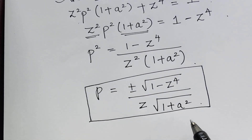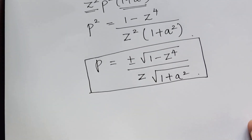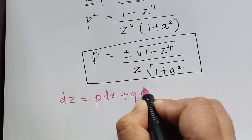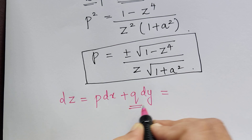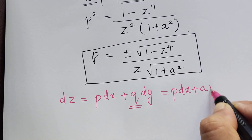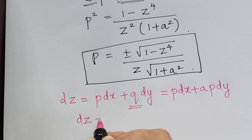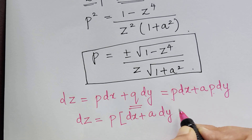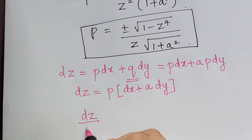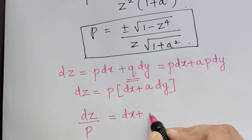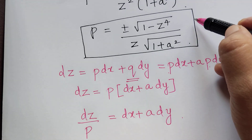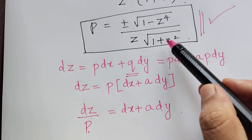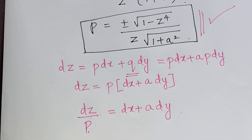Now the value of p and q has to be substituted in the equation dz equals p dx plus q dy. Since we have put q equal to ap, it becomes p dx plus ap dy. So dz equals p times the quantity dx plus a dy. Taking p to the left, we get dz divided by p equals dx plus a dy.